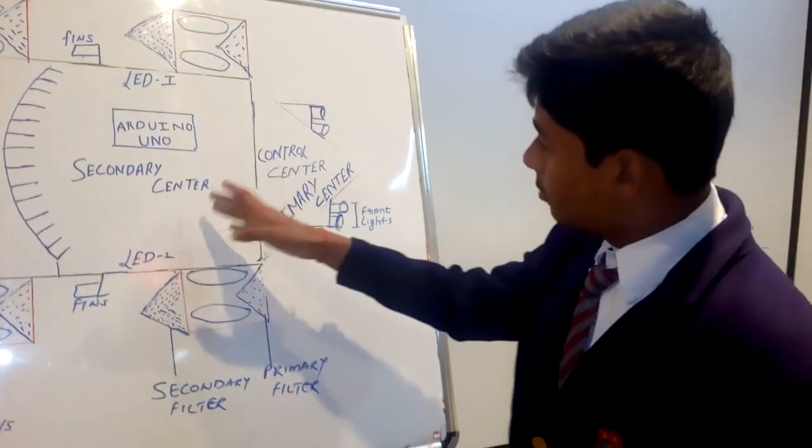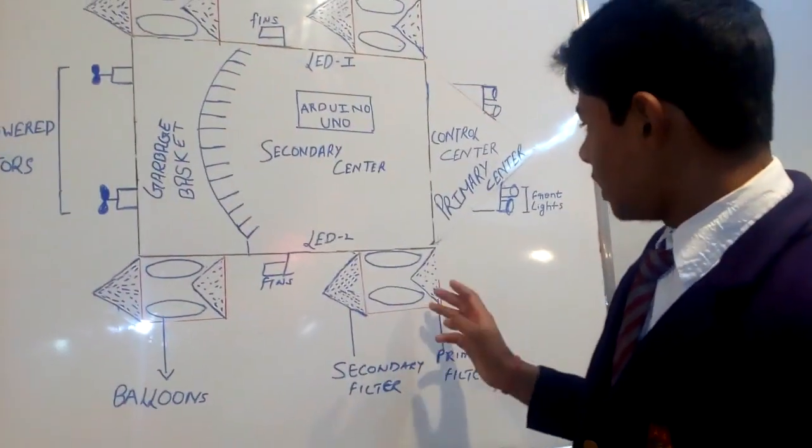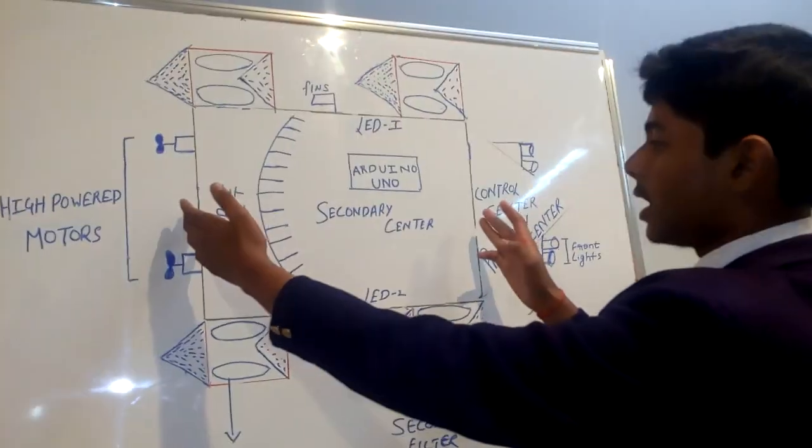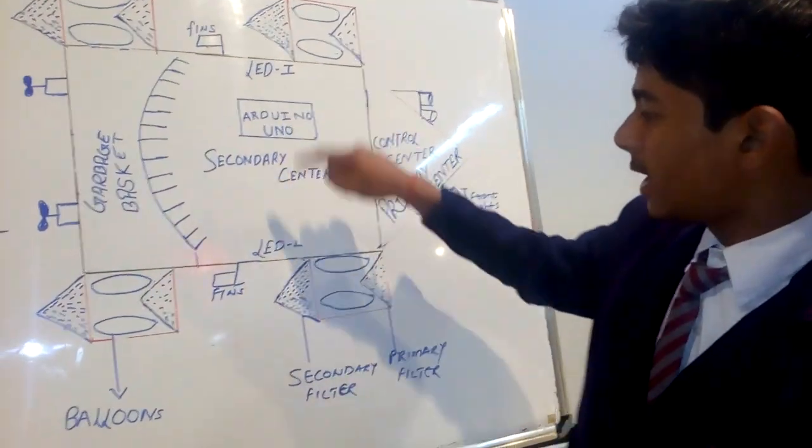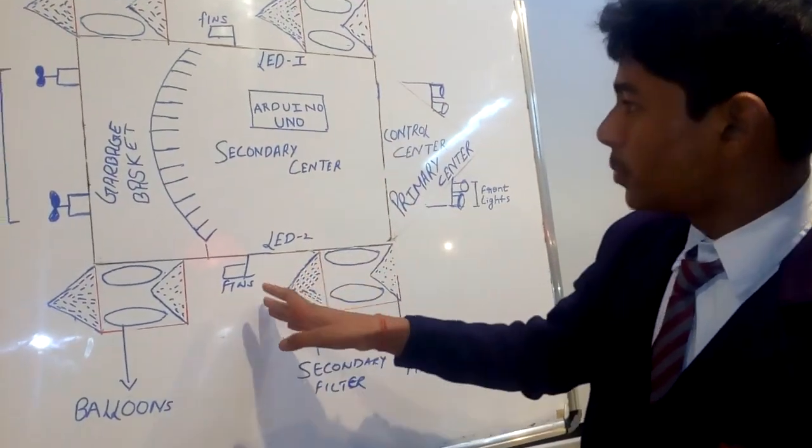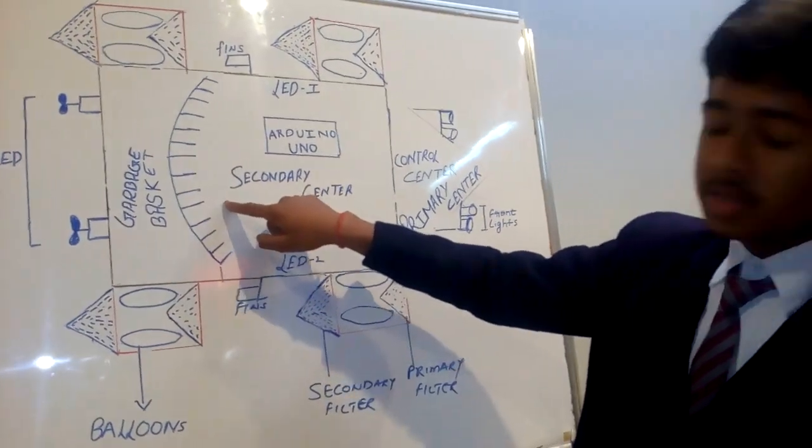Let's come to the middle piece of this body. It is a big cardboard piece. It has a secondary center at the edges of this cardboard piece and a basket which collects the plastic from the sea.